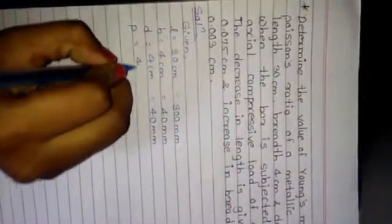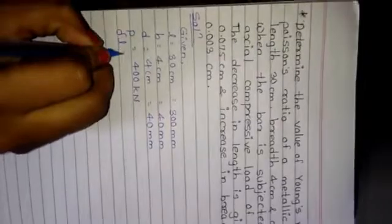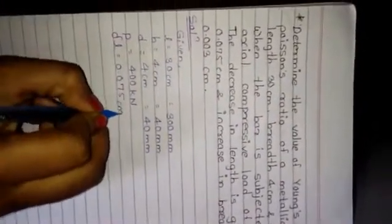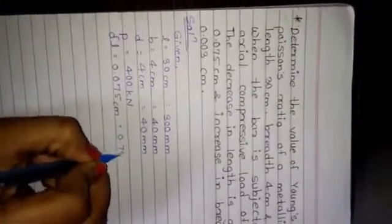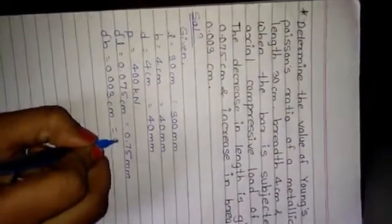Then, we have load, we denote it as P, which is 400 kN. So, delta L, which is 0.075 cm, which is equal to 0.75 mm. So, delta B, that is 0.003 cm, which is equal to 0.03 mm.